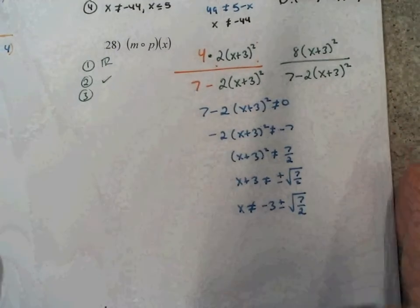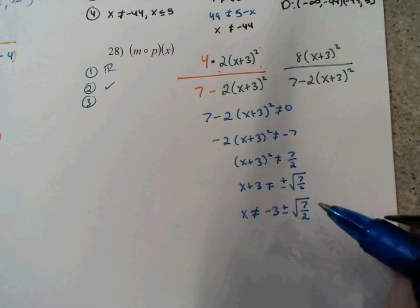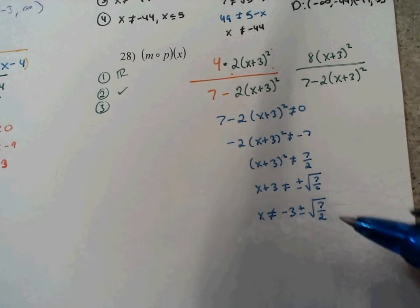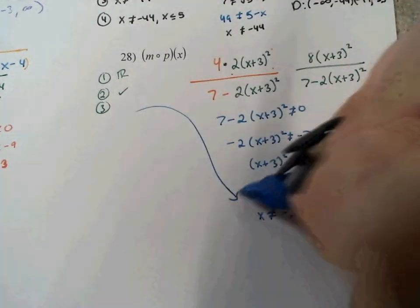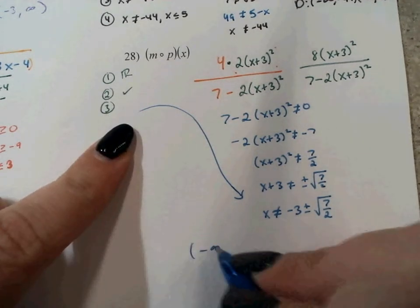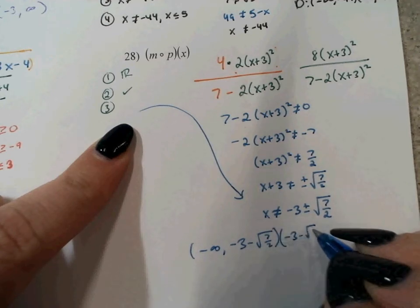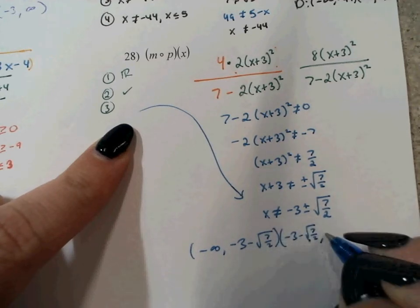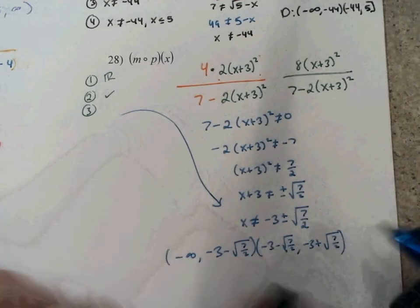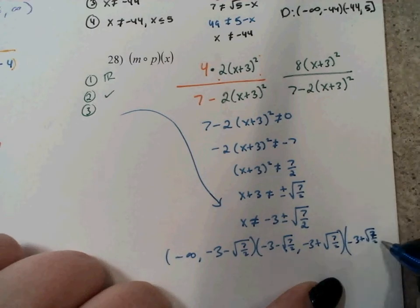Step 4: combine. We get all real numbers except those two values. So the domain is negative infinity to negative 3 minus the square root of 7 halves, then negative 3 minus the square root of 7 halves to negative 3 plus the square root of 7 halves, and finally negative 3 plus the square root of 7 halves to infinity.